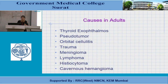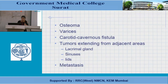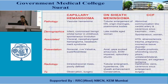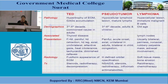The most common causes of proptosis in adults include thyroid exophthalmos, pseudotumor, orbital cellulitis, trauma, meningioma, optic nerve sheath meningioma, lymphoma, cavernous hemangioma, and tumors extending from adjacent areas or metastases.